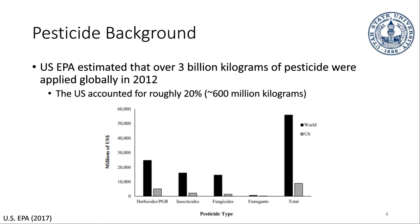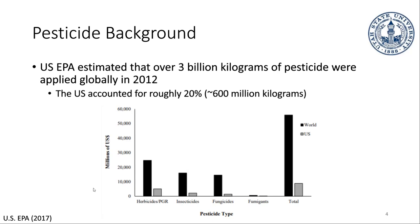Because pesticides have those benefits, it's not a surprise that they're used on such a large scale. According to the United States Environmental Protection Agency, a decade ago over 3 billion kilograms were sprayed globally, and the United States was about 20% of that — about 600 million kilograms. You can see the different types and the economic market value that these different classes have associated with them.